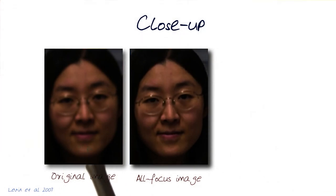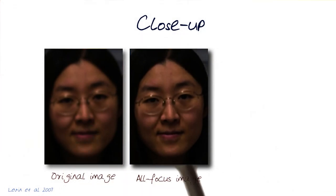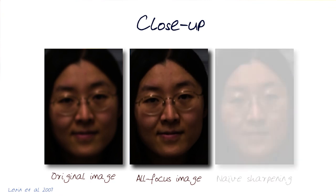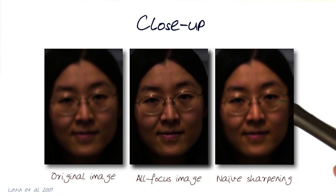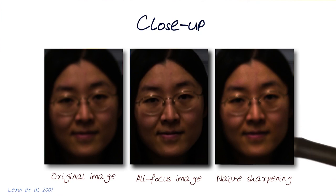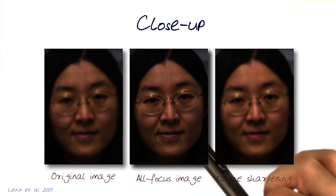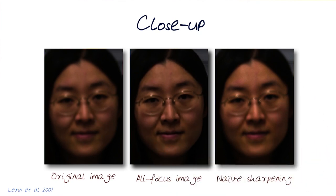The original image had a lot of focus blur, and you can see a much sharper image as the output. Of course, we could do some sort of naive sharpening and get simple results, and there are methods out there. But the point is that this was done on the camera itself with a coded aperture.